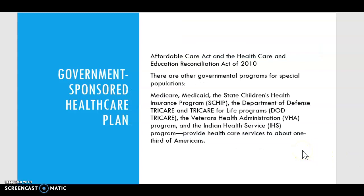The Affordable Care Act and the Health Care and Education Reconciliation Act of 2010 is still active. When the current president came into office he did try to replace it, but it was never officially signed by both legislative bodies and never made it to his desk. Besides the ACA, we can also think of other governmental programs for special populations: Medicare for the disabled and elderly, Medicaid for low-income people, the Children's Health Insurance Program, TRICARE for the Department of Defense and Veterans, and the Indian Health Services.